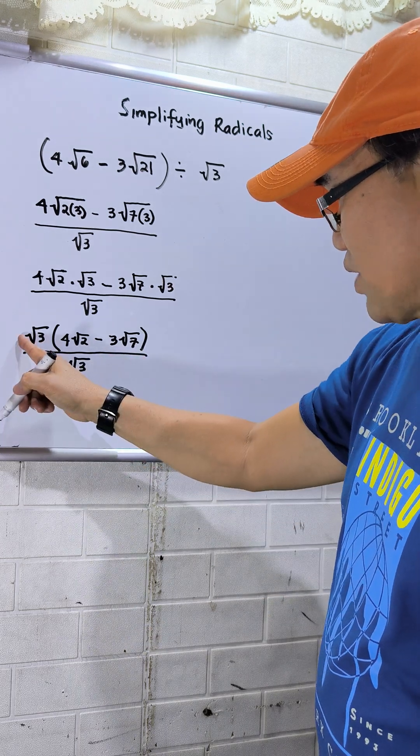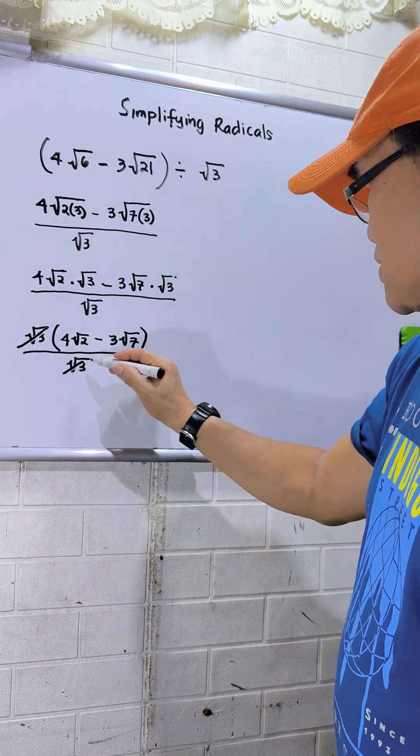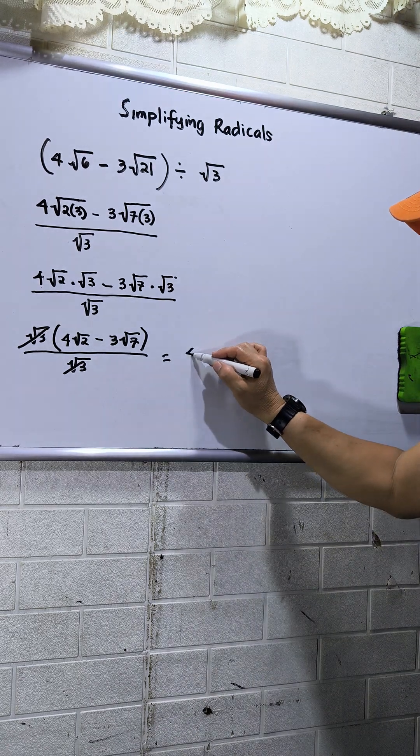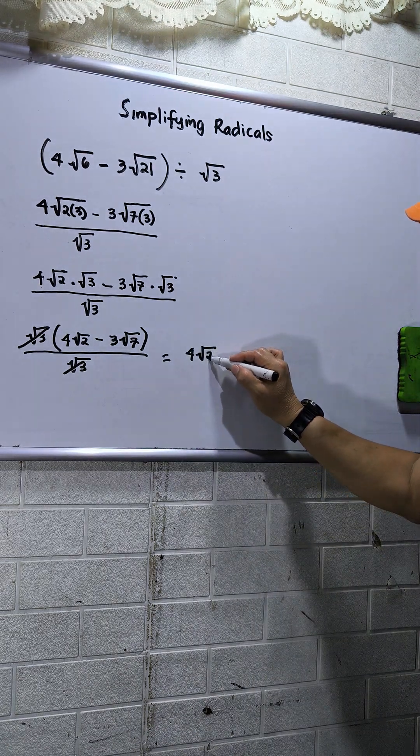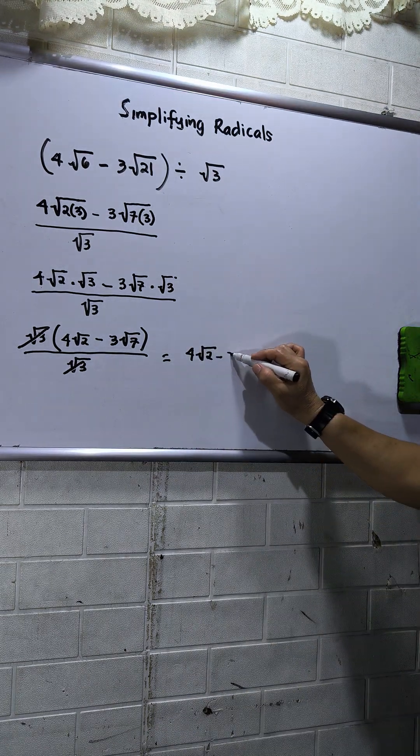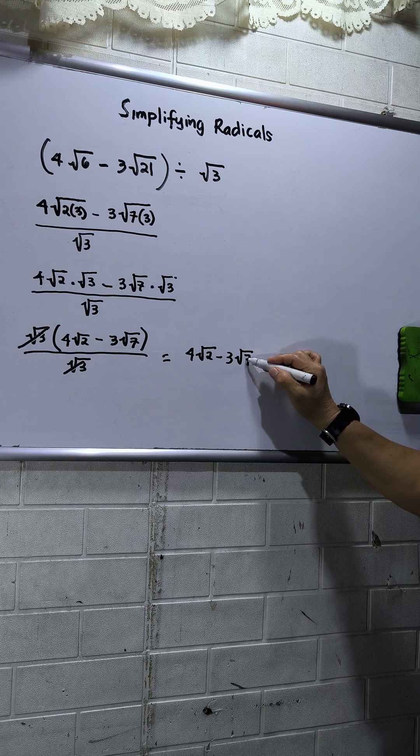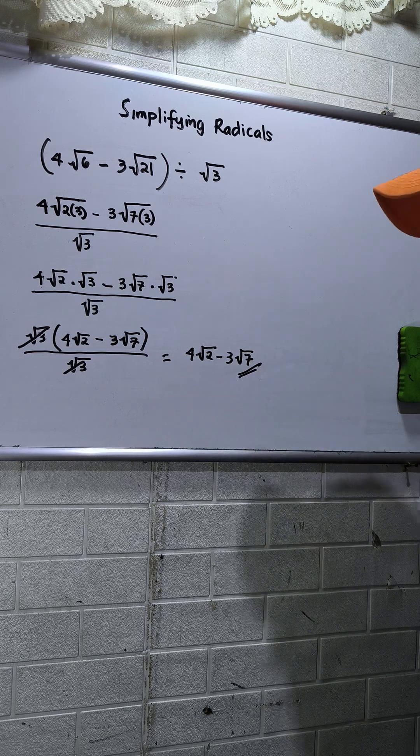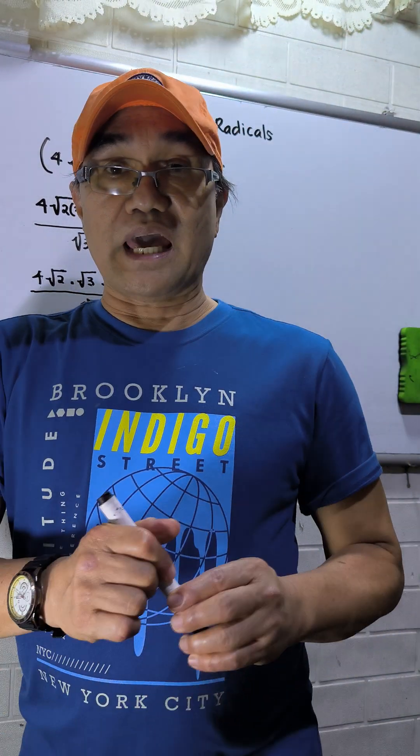So square root of 3 and square root of 3, these will be crossed out. My final answer will be 4 square root of 2 minus 3 square root of 7. That's all. Thanks for watching.